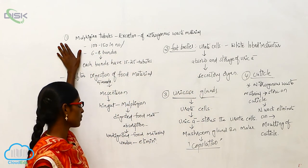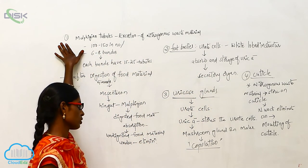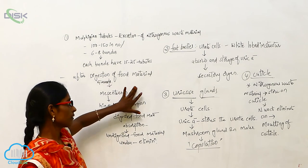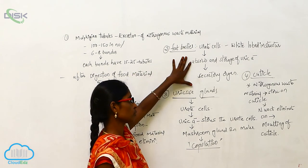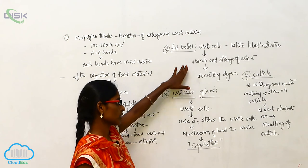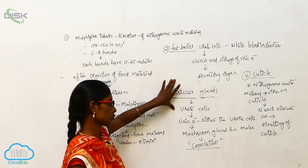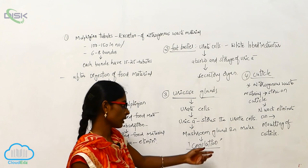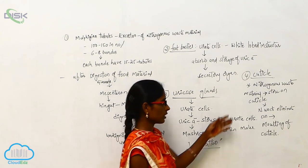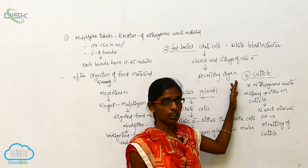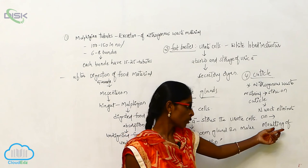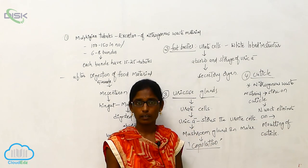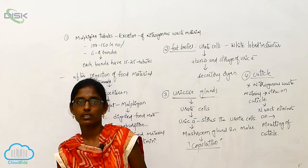These four structures are used for excretion. The Malpighian tubules and fat bodies are used for excretion; uricose glands are used for excretion in the male at the time of copulation; and the cuticle eliminates nitrogenous waste during the moulting stage.